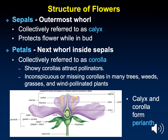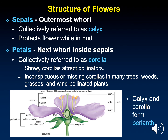Above the sepals are the petals. The petals collectively are called the corolla. The primary function of petals is attraction — often they are showy, have bright colors, and sometimes have scents. Some plants have flowers that do not have sepals or petals because the function of petals is not needed. Petals are needed when pollinators are required to transfer pollen. In the grass family, pollination happens via the wind, so grasses do not need petals.